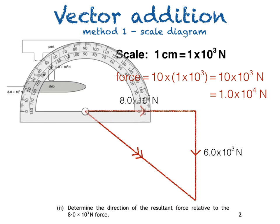We're measuring this angle because this is where we've started our scale diagram. I also drew the 8.0 × 10³ N force first so that I could measure the angle between it and the resultant force, as we're asked to do this in part 2 of the question.